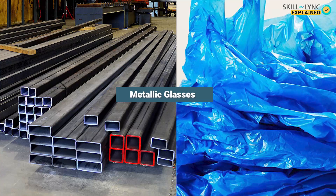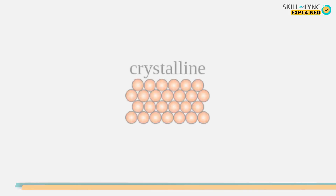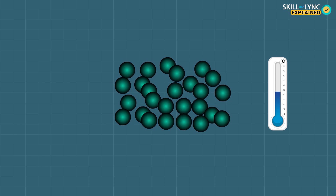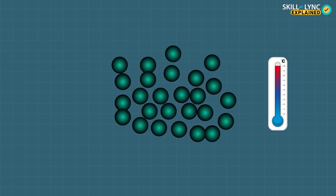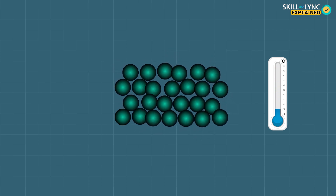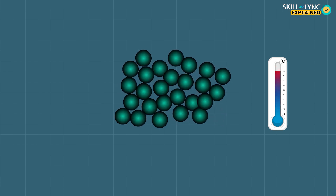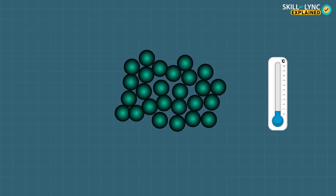We call them metallic glasses. As we know, solids can either be crystalline, exhibiting a fixed periodic arrangement of atoms, or amorphous, possessing a random arrangement of atoms. When a crystalline solid is heated, the atoms loosen up, but it returns to its original crystalline structure when cooled down. When the rate of cooling is fast, there will not be sufficient time for the atoms to settle back, which results in an amorphous structure. These amorphous solids are said to be metallic glasses.